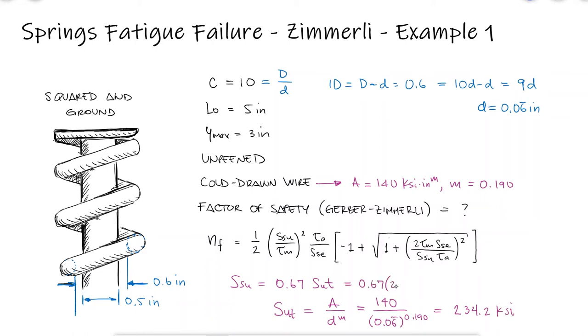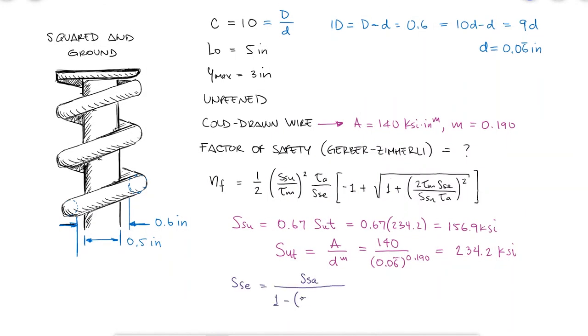With this value, and therefore the torsional modulus of rupture, we can use the Zimmerli data, SSA and SSM, to find the shearing endurance limit. Of course, the expression we use to find this endurance limit also corresponds with the Gerber criterion.